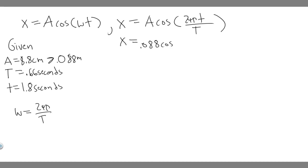So 0.088, that's going to be the amplitude, times the cosine of 2 pi. And then we're going to leave T because we just want the equation. We don't actually want the value over the time period, which is 0.66 seconds. So this right here is going to be the equation. So x equals 0.088 cosine 2 pi T over 0.66. This is your answer to A. Now let's do B.